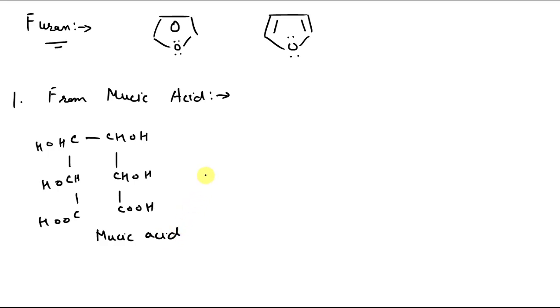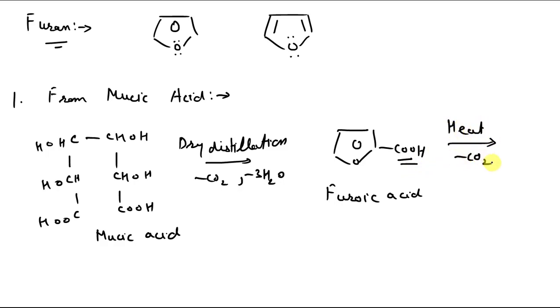Now if we do its distillation, dry distillation, then upon dry distillation we get this compound. This compound is called furoic acid. Now to get furan we have to do its decarboxylation which can easily be done upon heating. If we heat this furoic acid then it undergoes decarboxylation and what we get is furan. So this is the method to prepare furan from mucic acid.